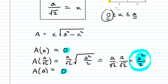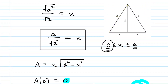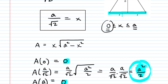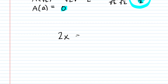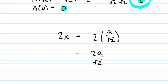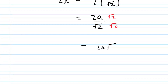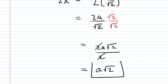We just have to finish answering the question, because it asked not for X per se but for the length of the third side of the triangle. The two equal sides were both A, but the third side has length 2X. So we take our X value and double it: 2 times A over root two gives 2A over root two. If your professor wants you to rationalize the denominator, multiply top and bottom by square root two to get 2A root two over 2. The twos cancel, and the length of the third side is A times the square root of 2. This is the final answer — the length of the third side that maximizes the area of the isosceles triangle.